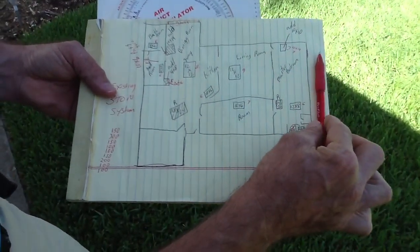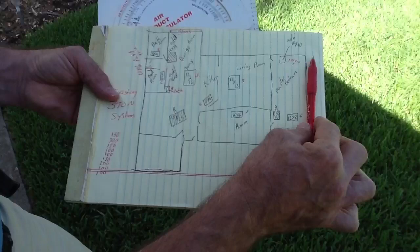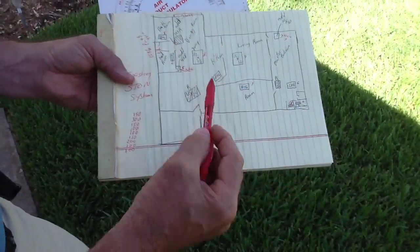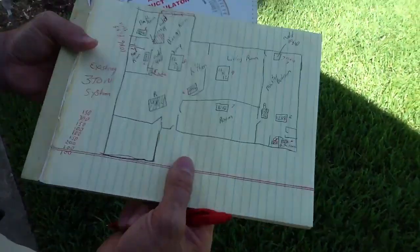As this heat comes in from the outside walls, the glass, it's going to come through, the air is going to blow and work its way back through with the negative pressure on this return.